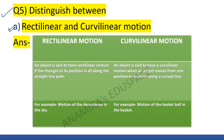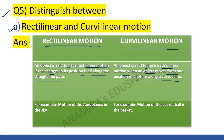Question 5A: distinguish between rectilinear motion and curvilinear motion. Rectilinear motion — an object is said to have rectilinear motion if the change in its position is all along a straight line path. Example: motion of a basketball going into the basket. Curvilinear motion — an object is said to have curvilinear motion when it moves from one position to another along a curved line. Example: motion of an aeroplane in the sky.